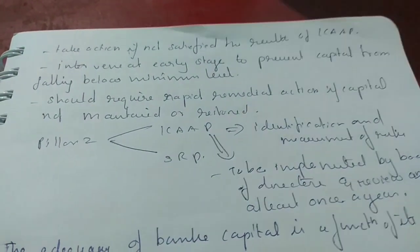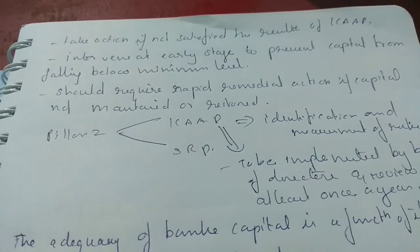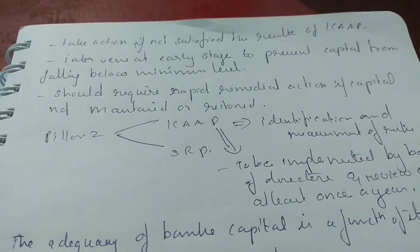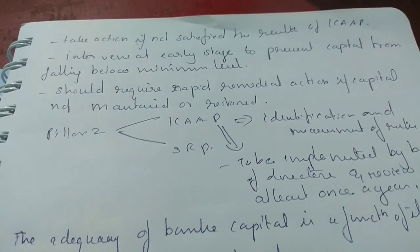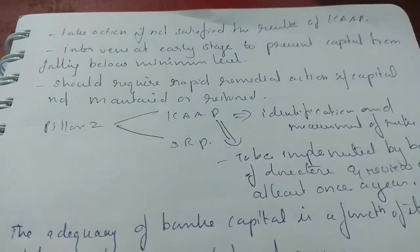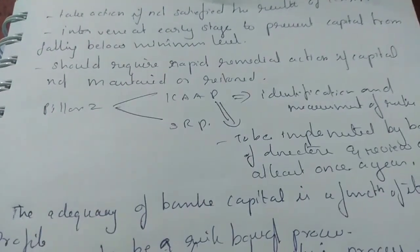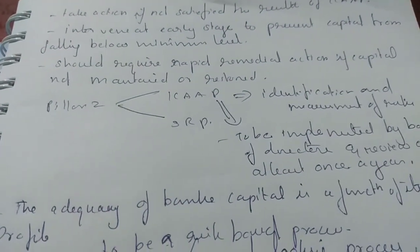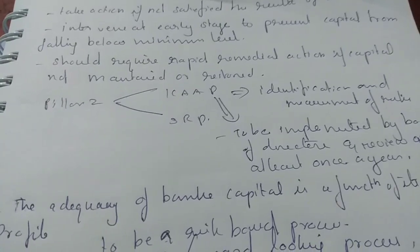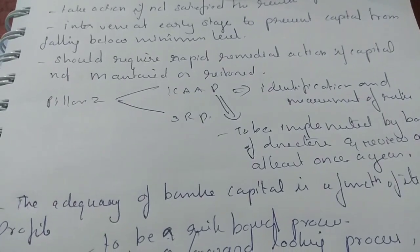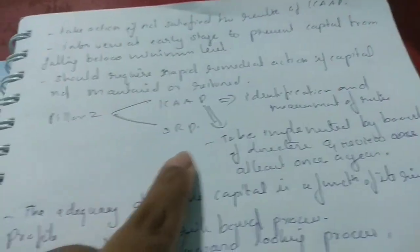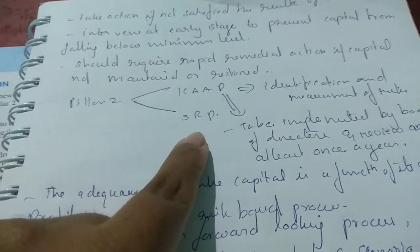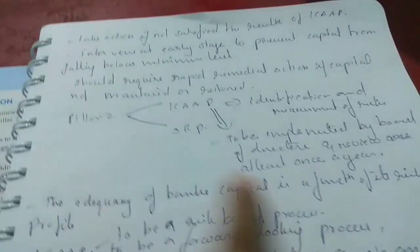A supervisor should require rapid remedial action if capital is not maintained or needs to be restored. Pillar 2 consists of two components: ICAP and SRP. Every bank must have an ICAP, which is reviewed by the SRP supervisor.